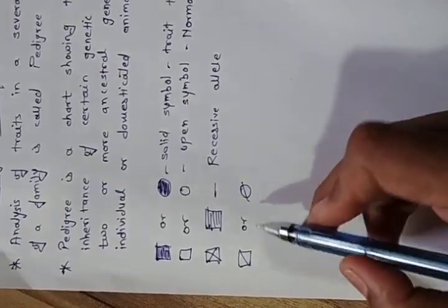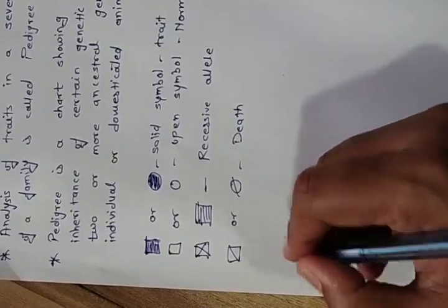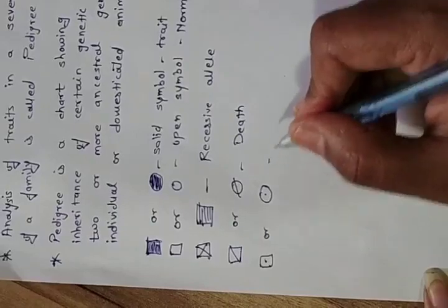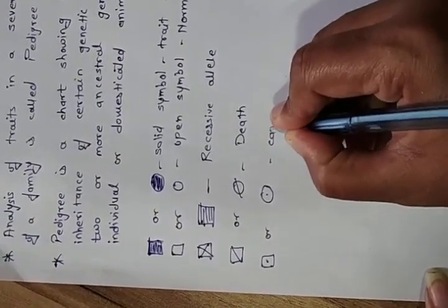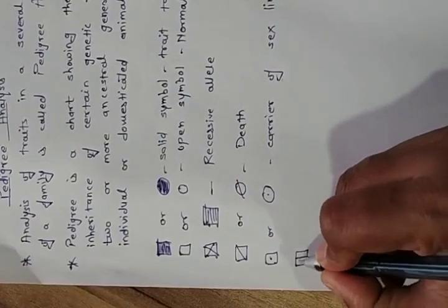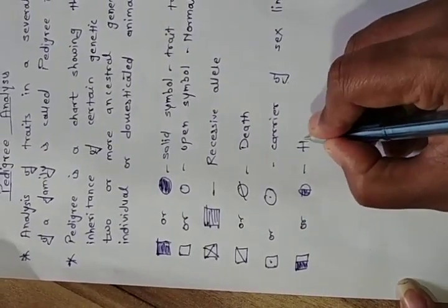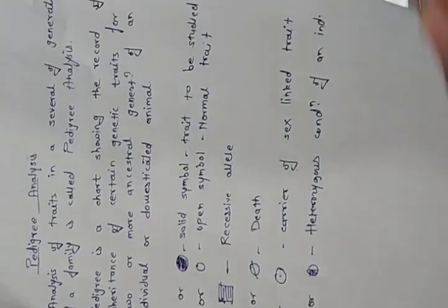A cross through the symbol denotes death of the individual. A dot in the center of the symbol indicates a carrier of a sex-linked trait. A half-shaded symbol denotes a heterozygous condition of an individual. These are the common symbols used during pedigree analysis.